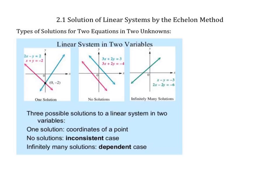In the past, we had graphed using just one linear straight line. But what happens now if we decide that we want to graph two of those lines together on the same plane? Well, there are three options that can happen. The first option is that they intersect and they have a solution at the point where they intersect. The second option is they would have no solutions — this is the inconsistent case, meaning that they have parallel lines.